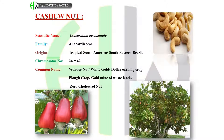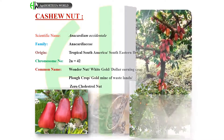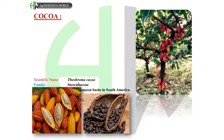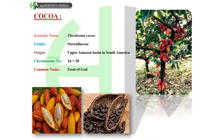Cashew nut chromosome number: 2n = 42. Common names: Wonder nut, white gold, dollar-earning crop, plow crop, gold mine of wastelands, and zero cholesterol nut. Cocoa: scientific name: Theobroma cacao. Family: Sterculiaceae or Malvaceae. Origin: Upper Amazon Basin in South America.